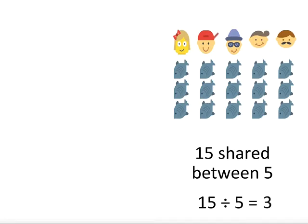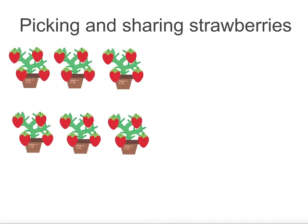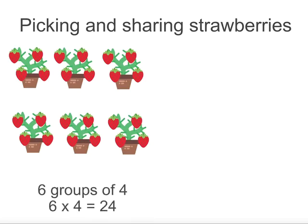With two-step problems, you break the question into two parts and then solve them. Take this next example. If I have six strawberry plants with four strawberries on each, how many altogether? Again, we have equal groups and we want to find a total, so we use multiplication.